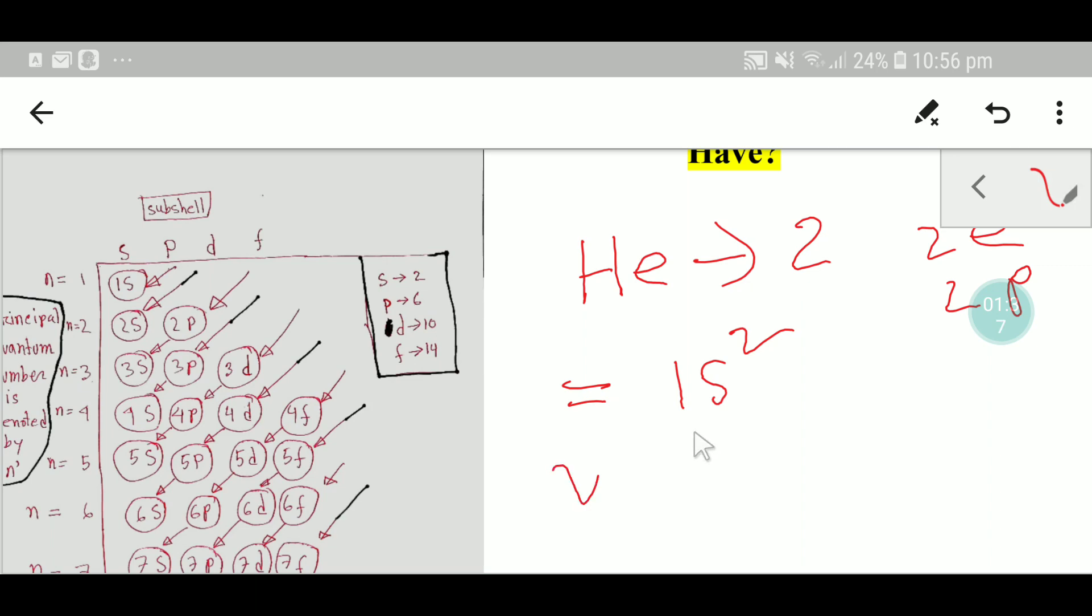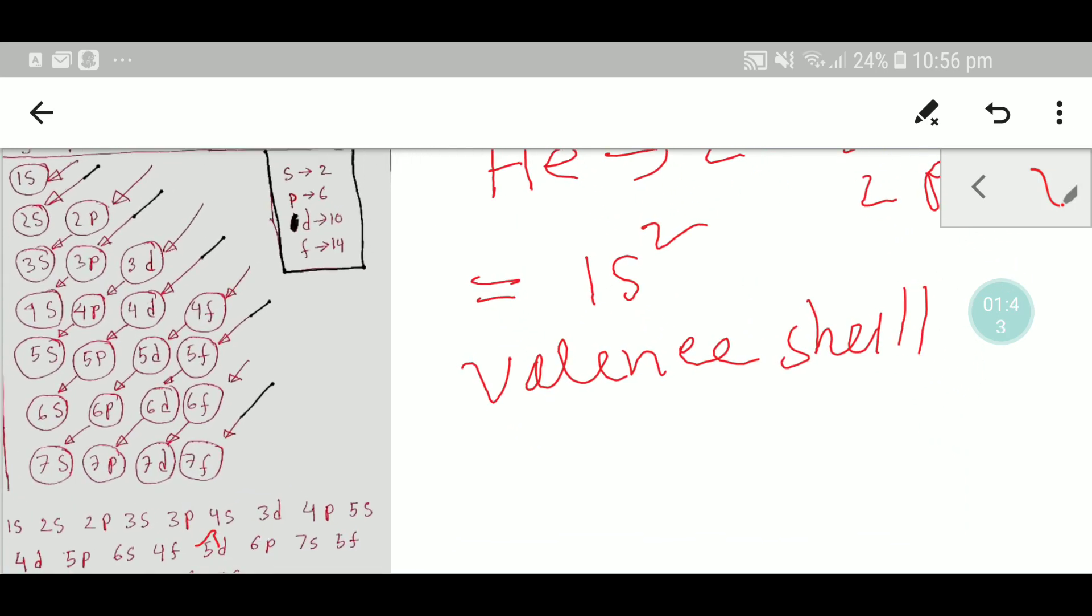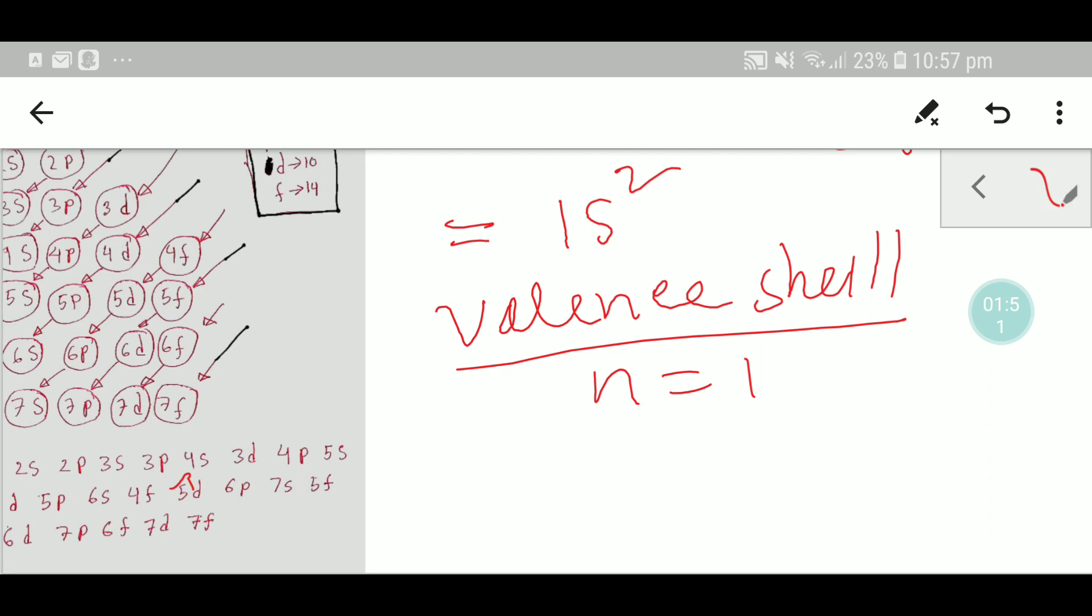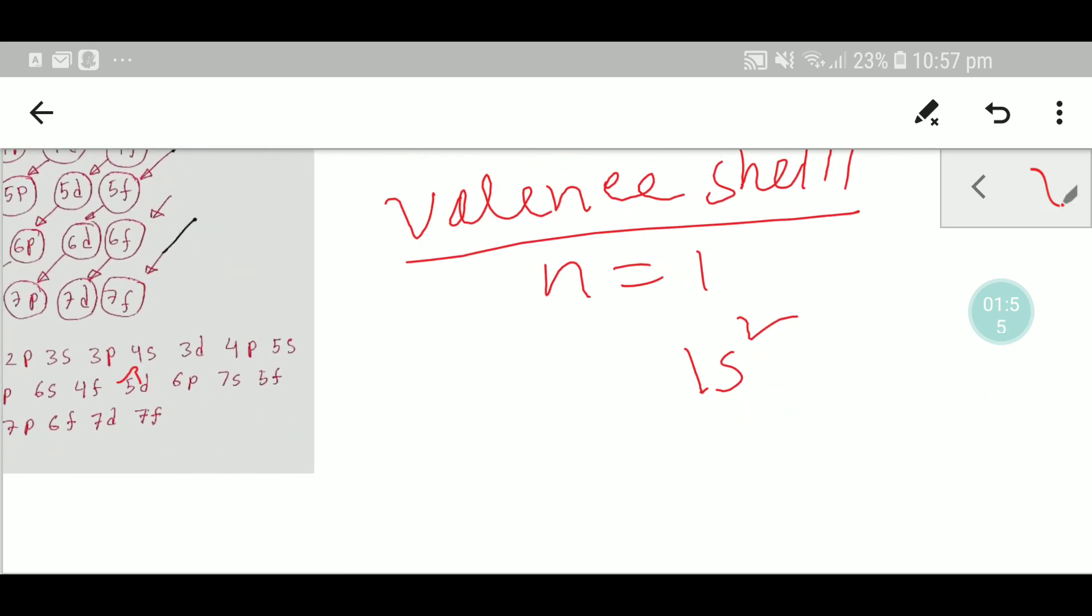Now we have to find out the valence shell. You can easily get the valence shell by the highest value of n. Here the highest value of n is 1, that is why 1s² is the valence shell of helium.